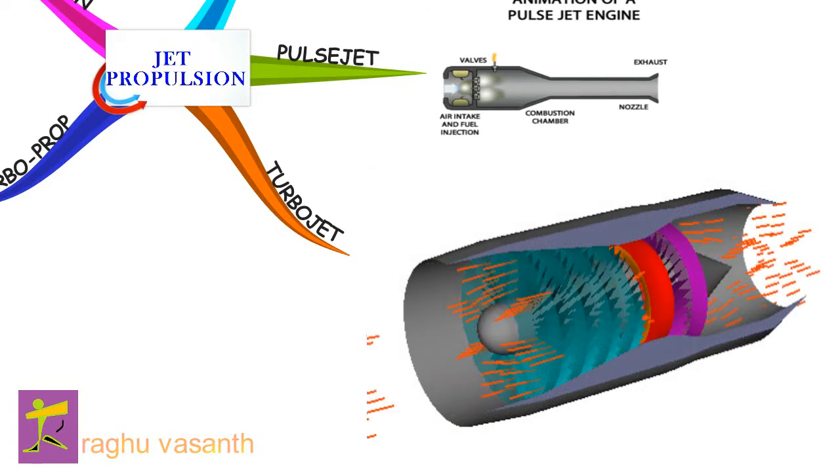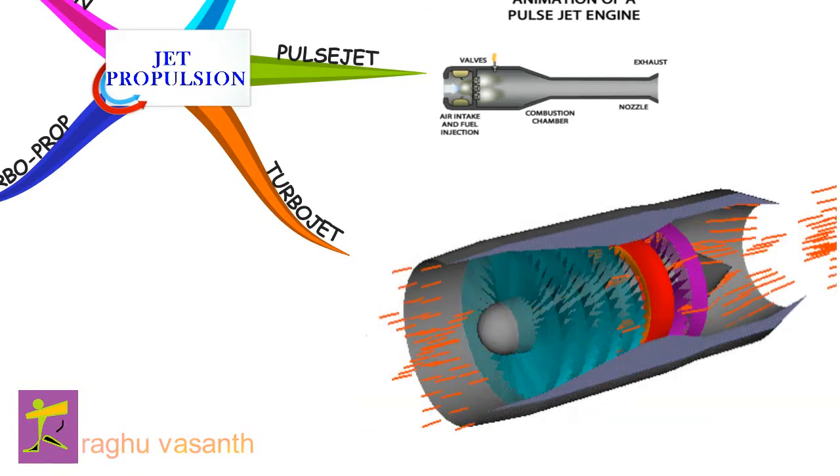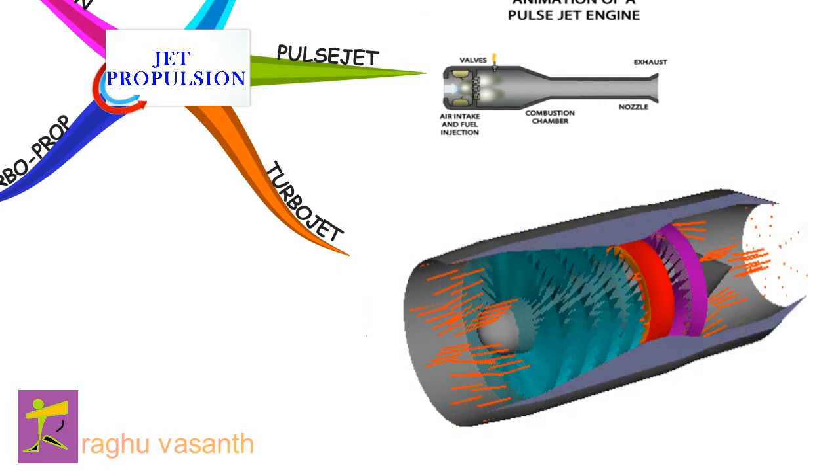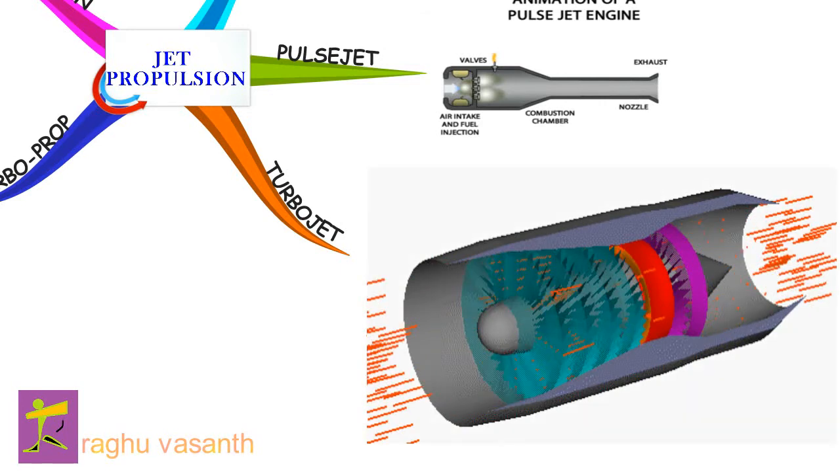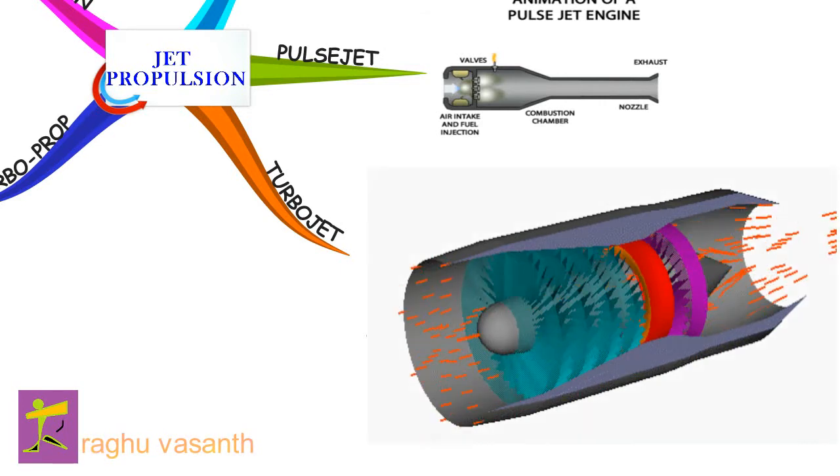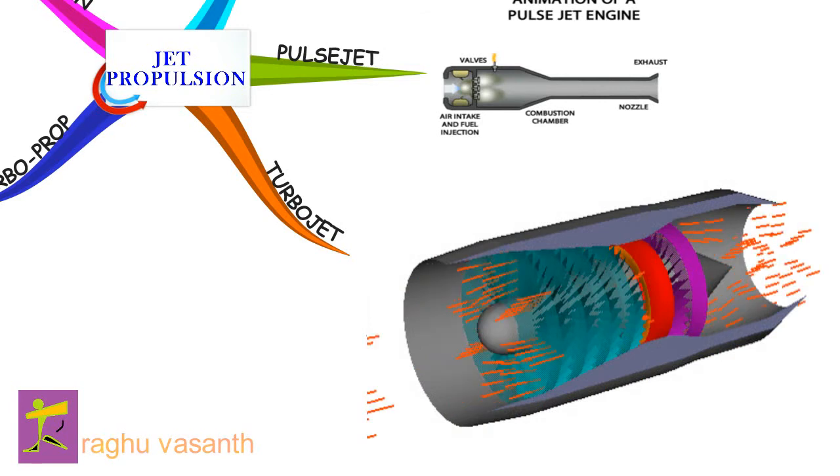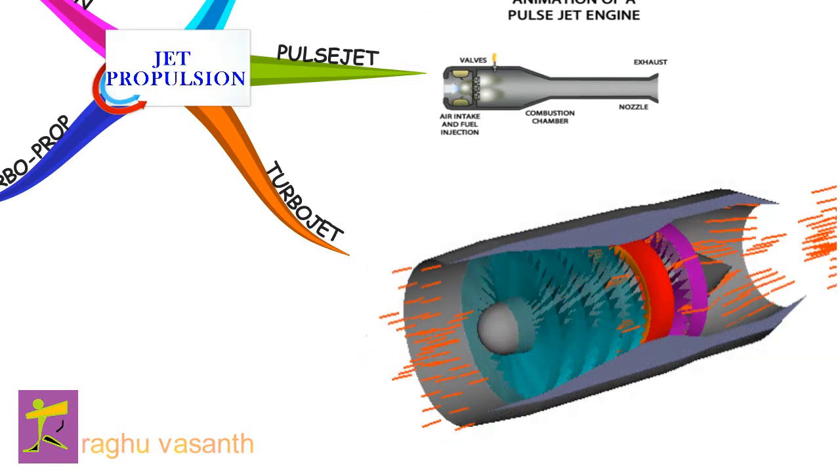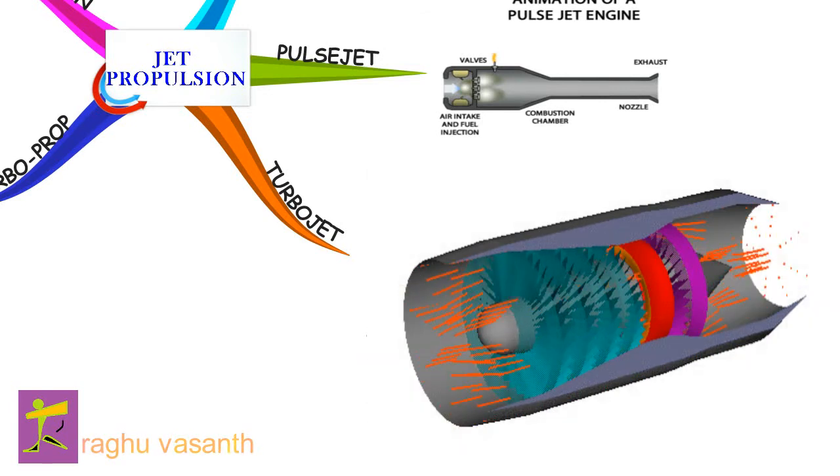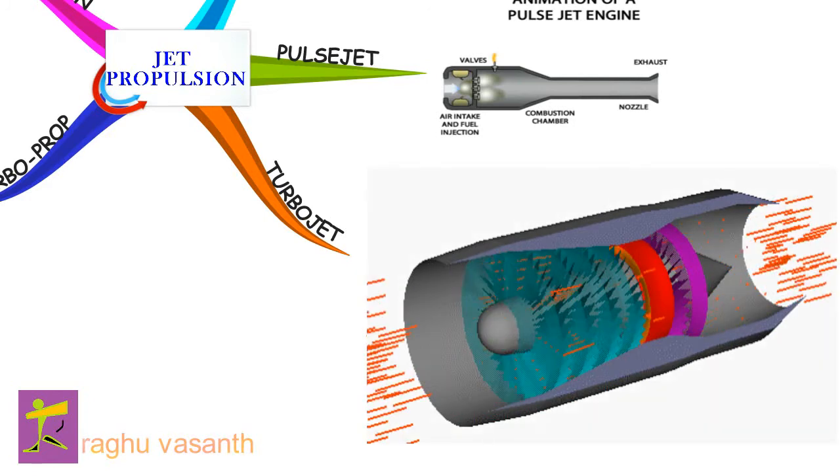The compressed air from the compressor is heated by the fuel in the combustion chamber and then allowed to expand through the turbine. The turbine exhaust is then expanded in the propelling nozzle where it is accelerated to high speed to provide thrust. Turbojets have poor efficiency at low vehicle speeds.